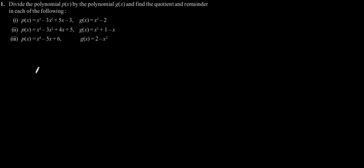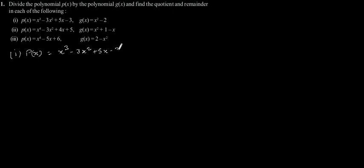Exercise 2.3, Question number 1. Divide the polynomial P by the polynomial g(x) and find the quotient and remainder in each of the following. First, P(x) is equal to x to the power 3 minus 3x squared plus 5x minus 3, and g(x) is equal to x squared minus 2.